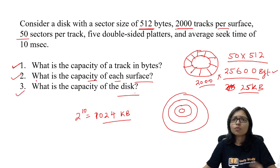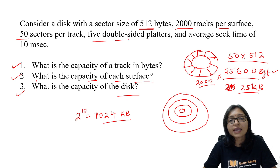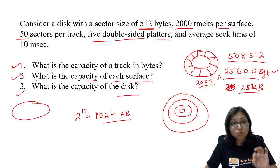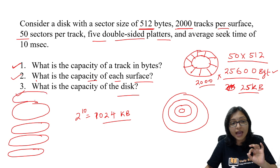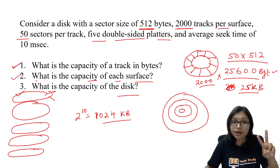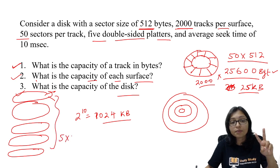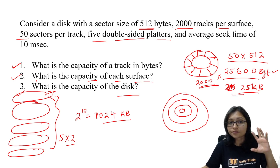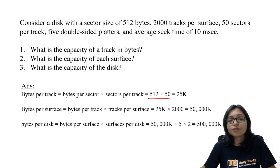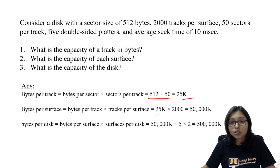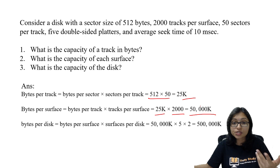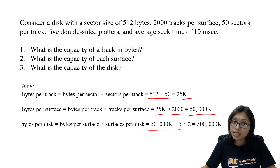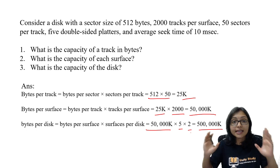Now the capacity of the disk. There are 5 double-sided platters. One platter means one surface size, and there are 5 such platters, and each platter has 2 surfaces. So total is 5 multiplied by 2 surfaces, multiplied by the surface size (2000 tracks × 25K). That gives: 512 × 50 = 25K; 25K × 2000 = 50,000K; 50,000K × 5 platters × 2 surfaces = total disk capacity.